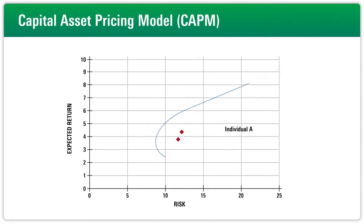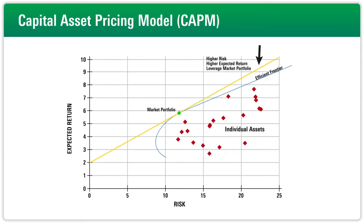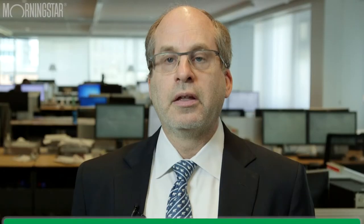Firstly, the market portfolio, which consists of all securities weighted by their market capitalizations, has the highest level of expected return for its level of risk – what Markowitz described as being on the efficient frontier. Secondly, all investors hold either a leveraged position in the market portfolio to raise expected return and risk above that of the market portfolio, or combine the market portfolio with the risk-free asset to take on less risk and thus less expected return. This conclusion of the CAPM is the theoretical basis for index investing.